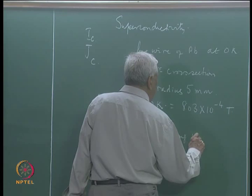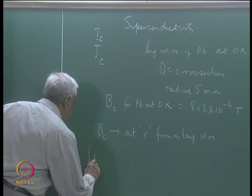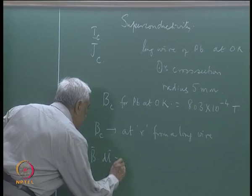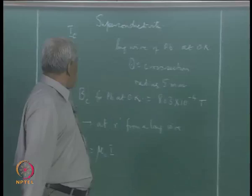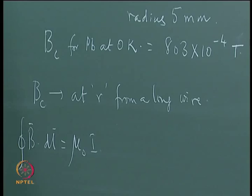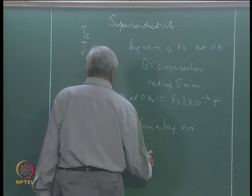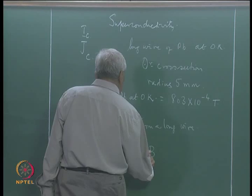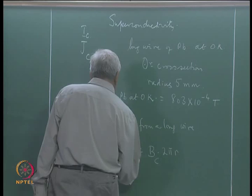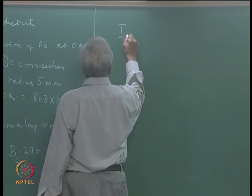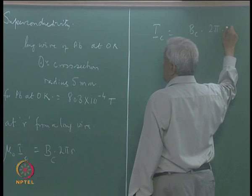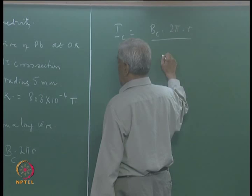This is given by Ampere's circuital theorem, where I is the current. In this case, the line integral dL gives B constant, so this will be B times 2πr. If this is the critical field, this will be the corresponding critical current. So I_C = B_C × 2πr / μ₀.